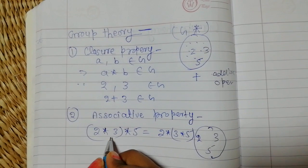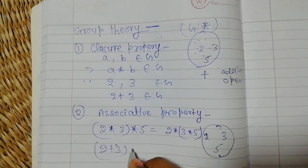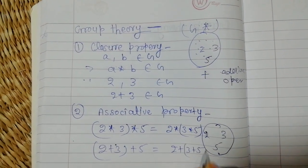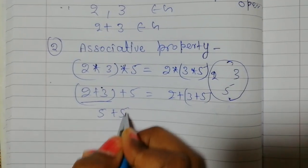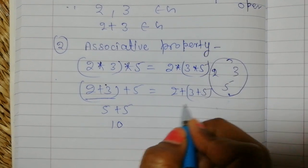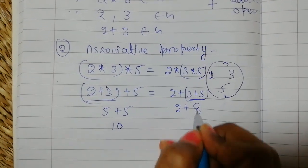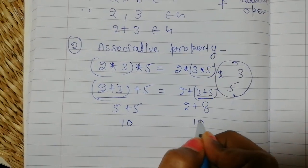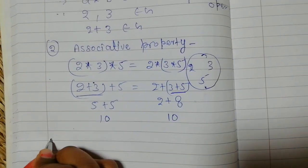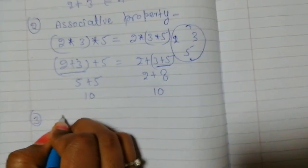We take the operation plus: two plus three plus five equals two plus three plus five. First we add five plus five, we get ten on this side. And on this side two plus three is five, then add five, we get ten. Both sides are equal, so associative property is satisfied.